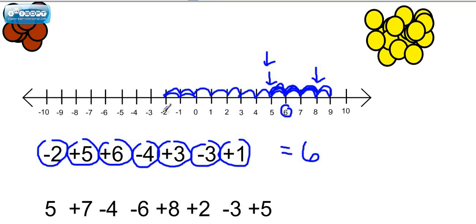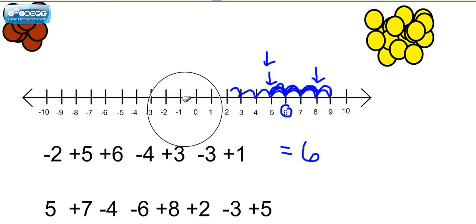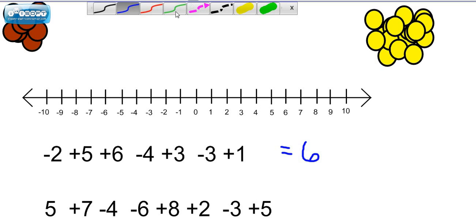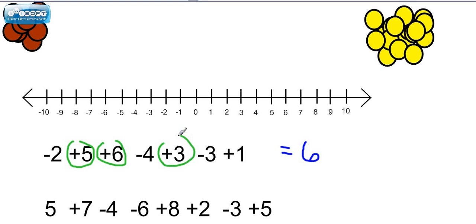Now I want to show you an easier way to do that that doesn't require any jumping back and forth on the number line. What we're going to do is take a look at all of our positive values first. So I'm going to circle them in green. Now if you had teachers that show you these integer chips, that means we have five of these, six more of them, three more of them, and one more. How many yellow chips do we have all together?